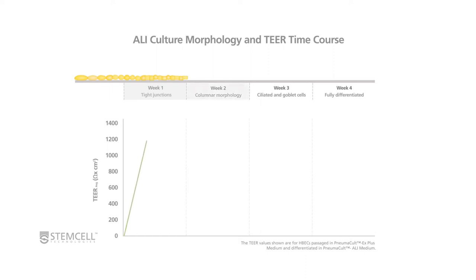At week 2 post-ALI, the pseudostratified epithelium will begin to form and cells determined for differentiation will begin to stand upright into their columnar morphologies. TEER values will fall into an ideal TEER range as paracellular and transcellular movements begin to take place.